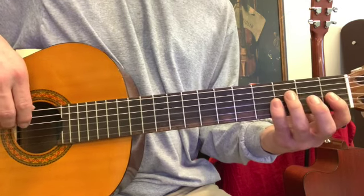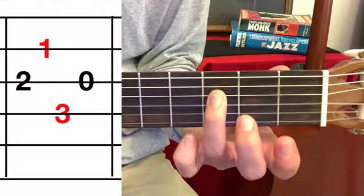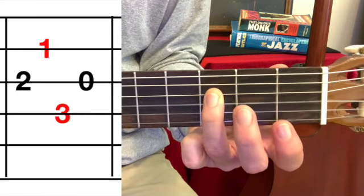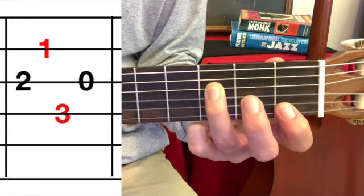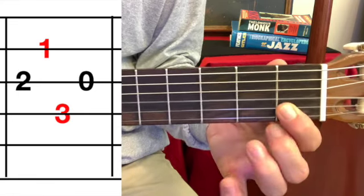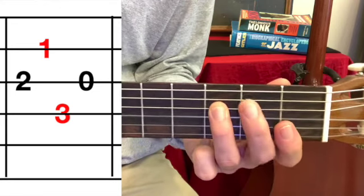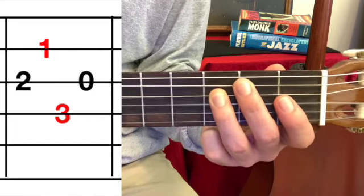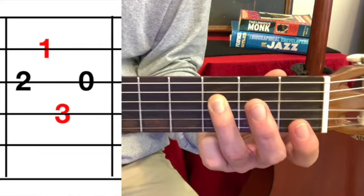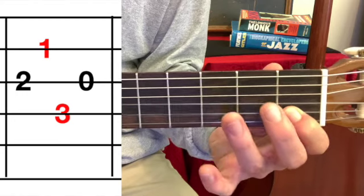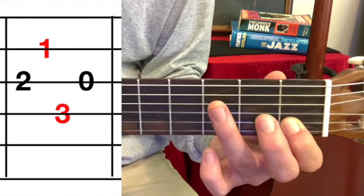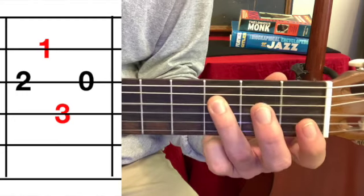The next note is the third fret D string. So let's think about how this is going to work. We are going from the first fret B string, we are skipping over the G string, coming to the third fret D string. You may need to practice that jump a couple of times. First fret B string, skip the G string, D string.